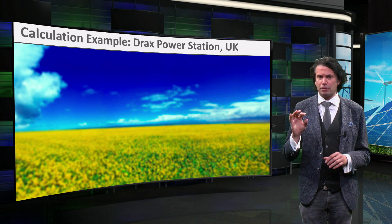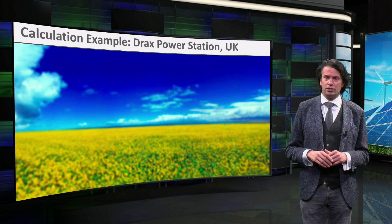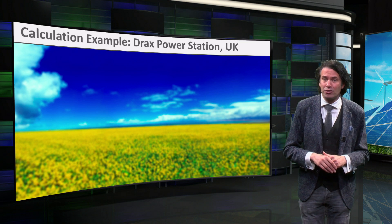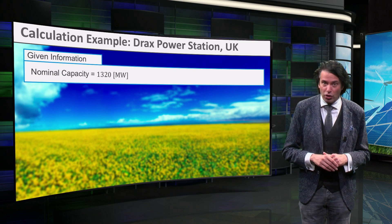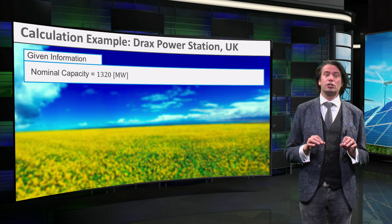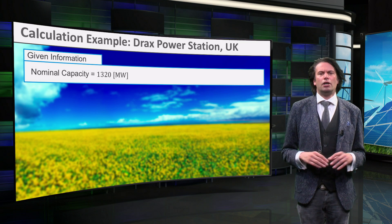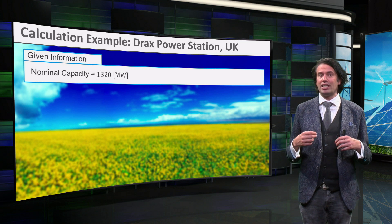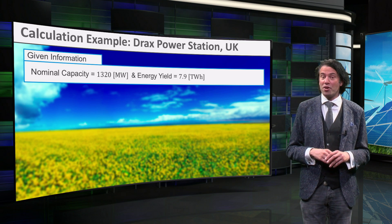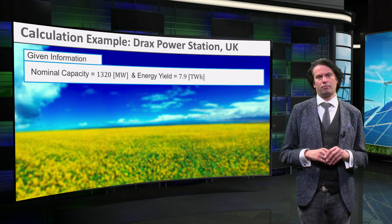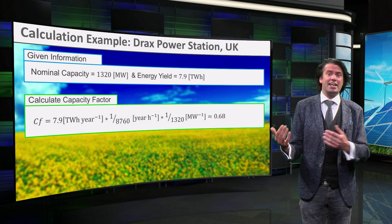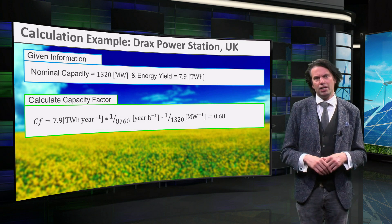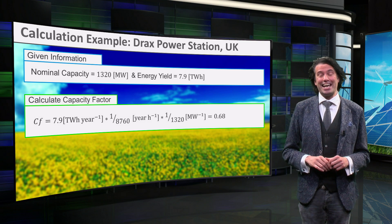The power station uses all kinds of wood products imported from North America and has an energy yield of 7.9 TWh per year. The capacity factor can be calculated by dividing the energy yield by the nominal production multiplied by the number of hours in a year. This results in a capacity factor of 68%.